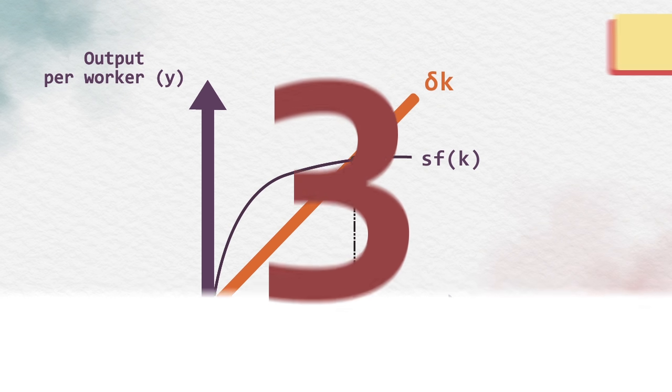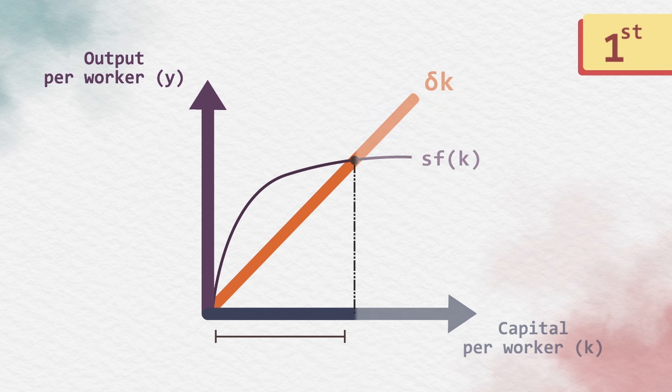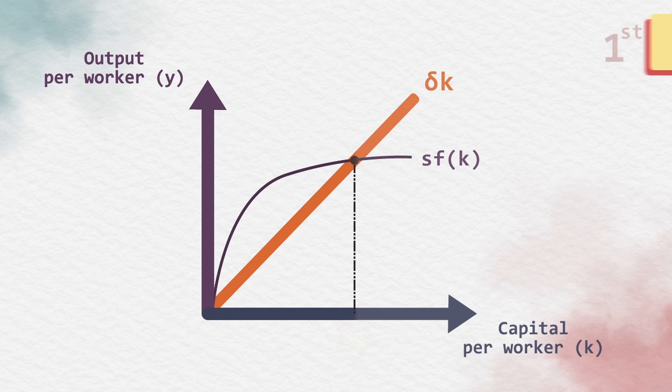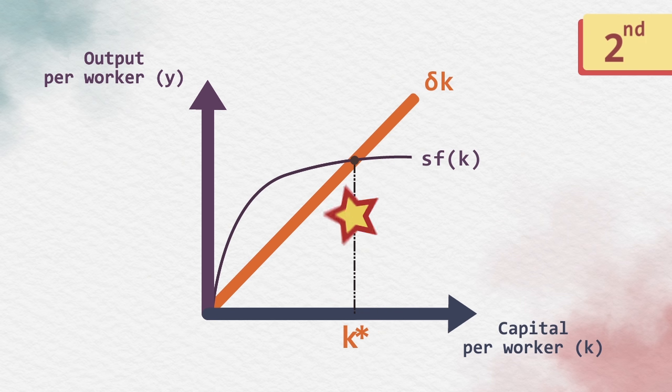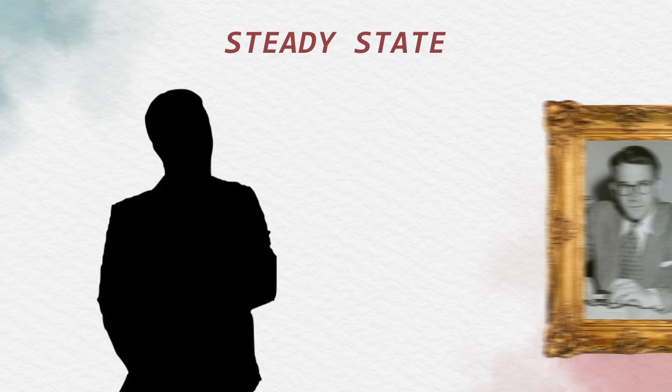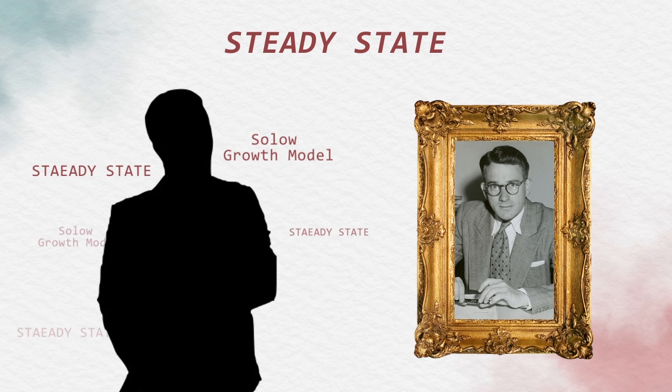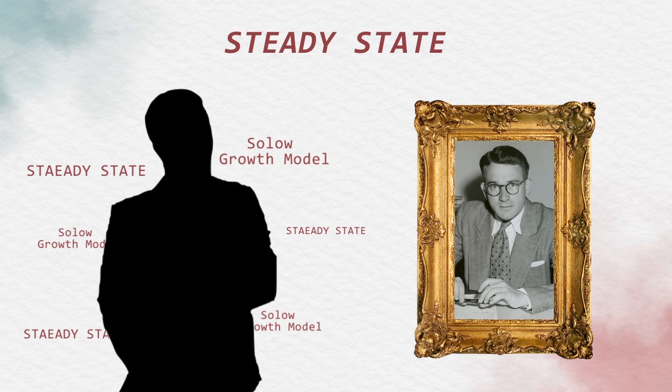First case: investment exceeds depreciation; we get a positive change in capital per worker. Second case: when investment and depreciation intersect, this situation is called the steady state level of capital. This point leads to the goal of understanding the Solow growth model. At this steady state, investment exactly equals depreciation, and the level of capital stock will remain the same.